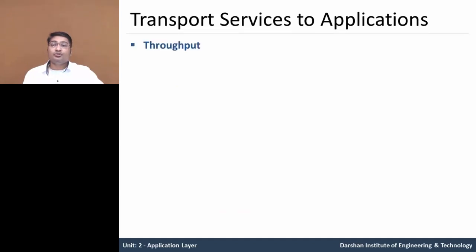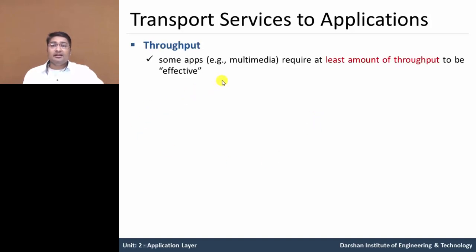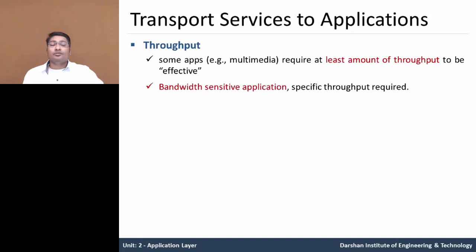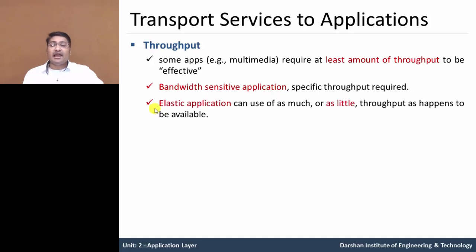The second parameter is throughput. Some applications require at least a minimum amount of throughput to be effective. For example, using internet telephony like Skype — if data loss occurs during communication, it can adjust. These are called bandwidth-sensitive applications that require a specific throughput. There are also elastic applications that use as much or as little throughput as happens to be available.